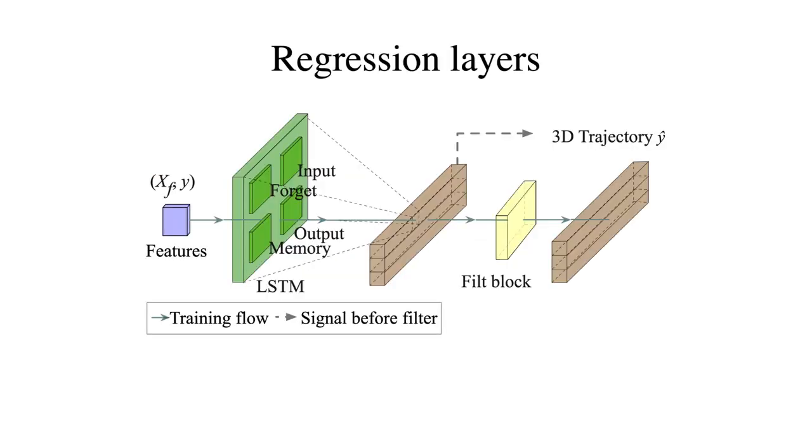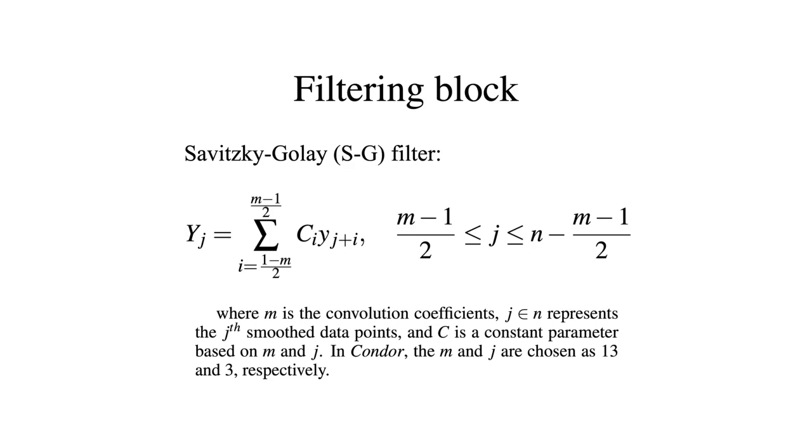Then we put the filtered features from the sensor data into the regression layer, followed by an LSTM block to do the regression. After that, there is a filter block, and the final output is the 3D trajectory. The whole layer has been optimized via the ground truth, the swing trajectory from the OptiTrack. For the filter block, we use the Savitzky-Golay, the SG filter. In our experiment, we tried several parameters, and finally we chose M and J as 13 and 3, respectively.